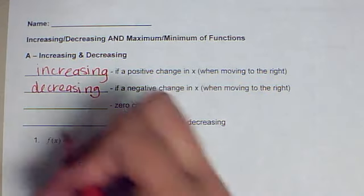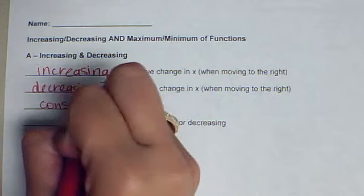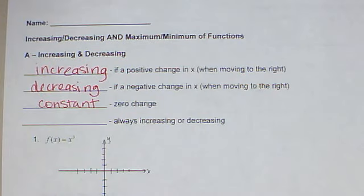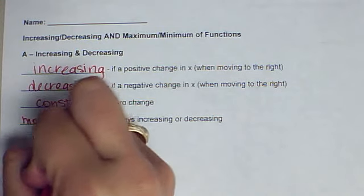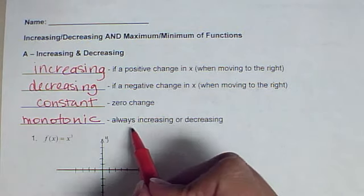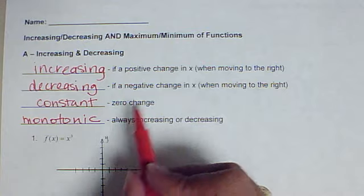If there is zero change, that's constant. And then the one new word we learned today was monotonic.